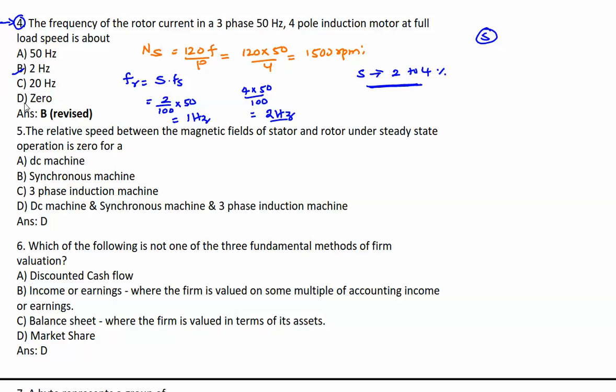Next question: The relative speed between the magnetic fields of stator and rotor under steady state condition or operation is zero for. The relative speed is the difference between the speeds - the flux creating one speed and the rotor creating some other speed. They should always be in phase. Under steady state condition it is zero for all electrical machines - DC machine, synchronous machine, 3-phase induction machine. The answer is D.